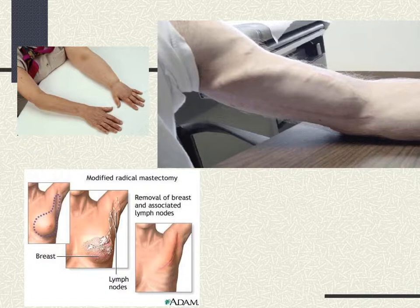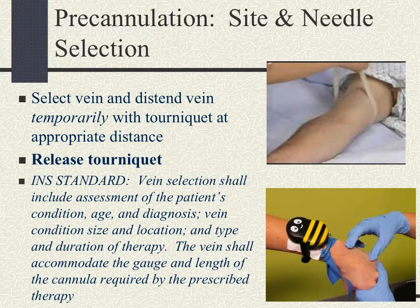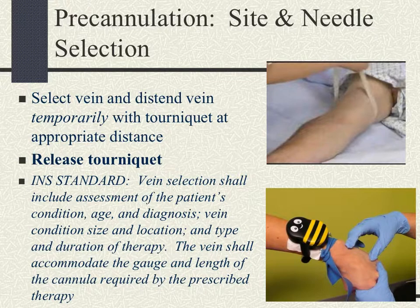The top right picture shows a shunt, so we want to avoid those areas as well. Now that we have all our equipment gathered and the patient is educated, appropriately positioned, and has gone to the bathroom, we want to select our vein and distend it temporarily with the tourniquet at the appropriate distance.